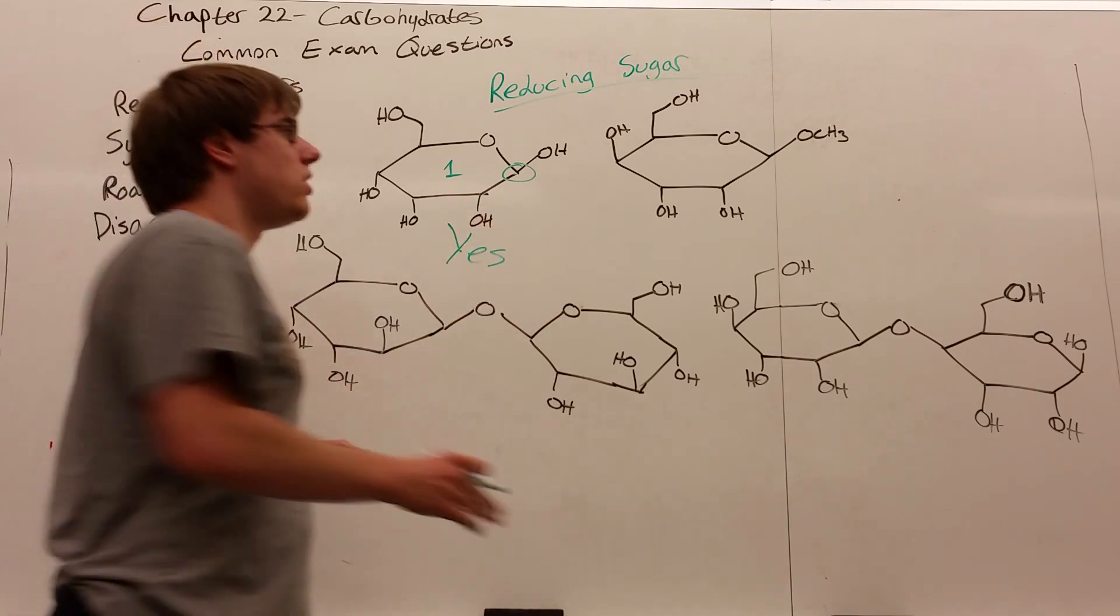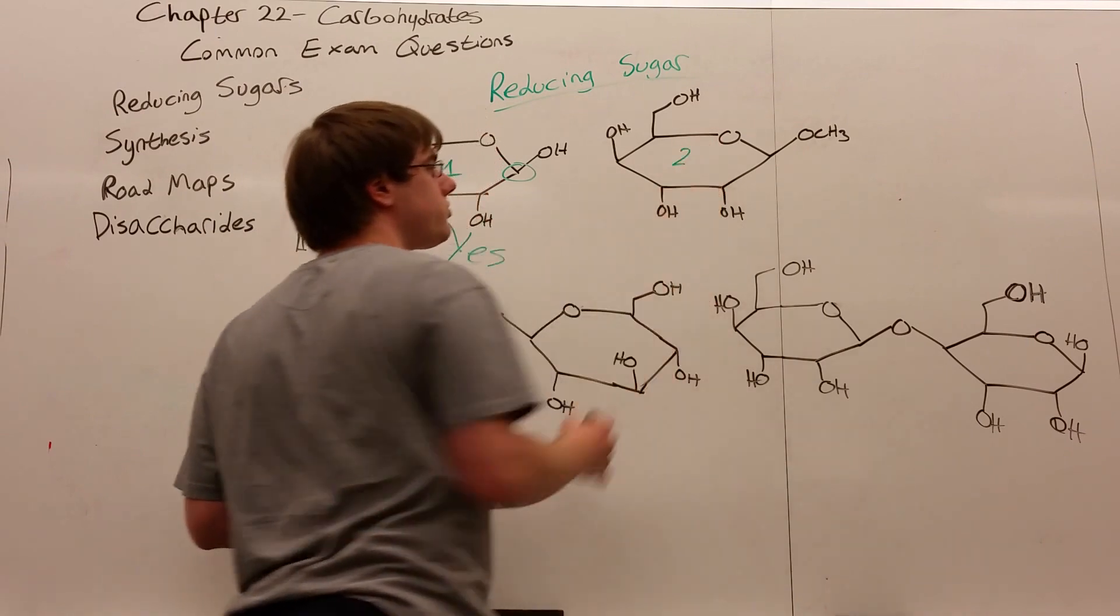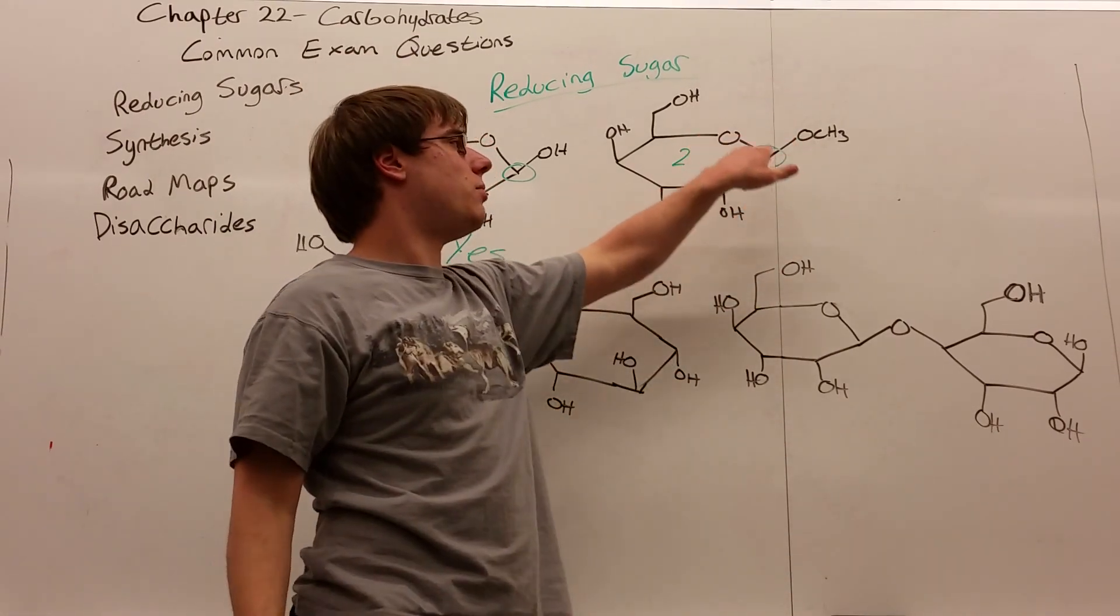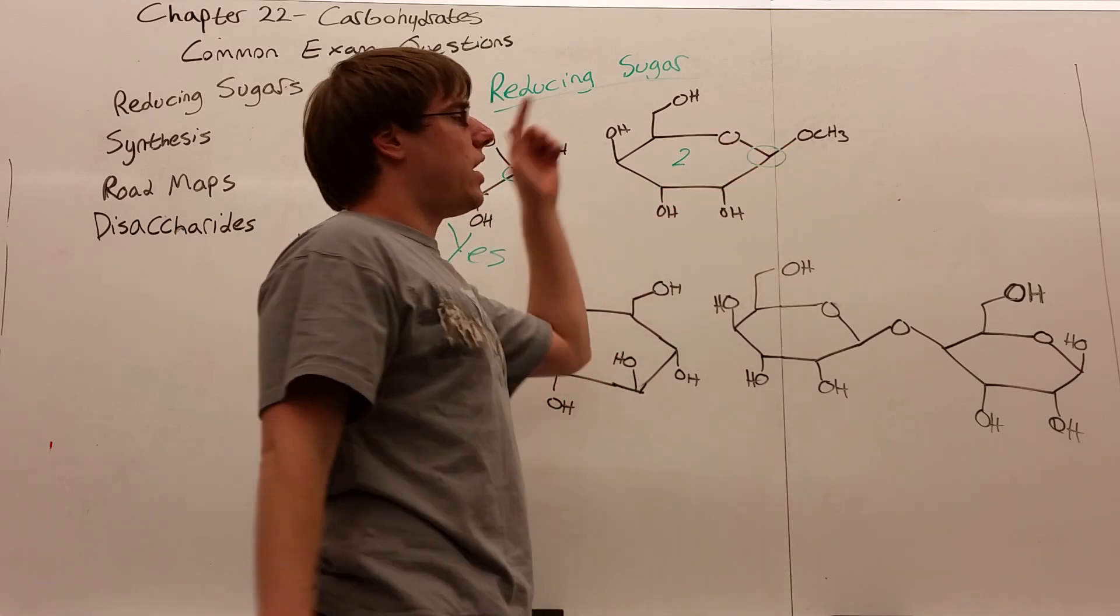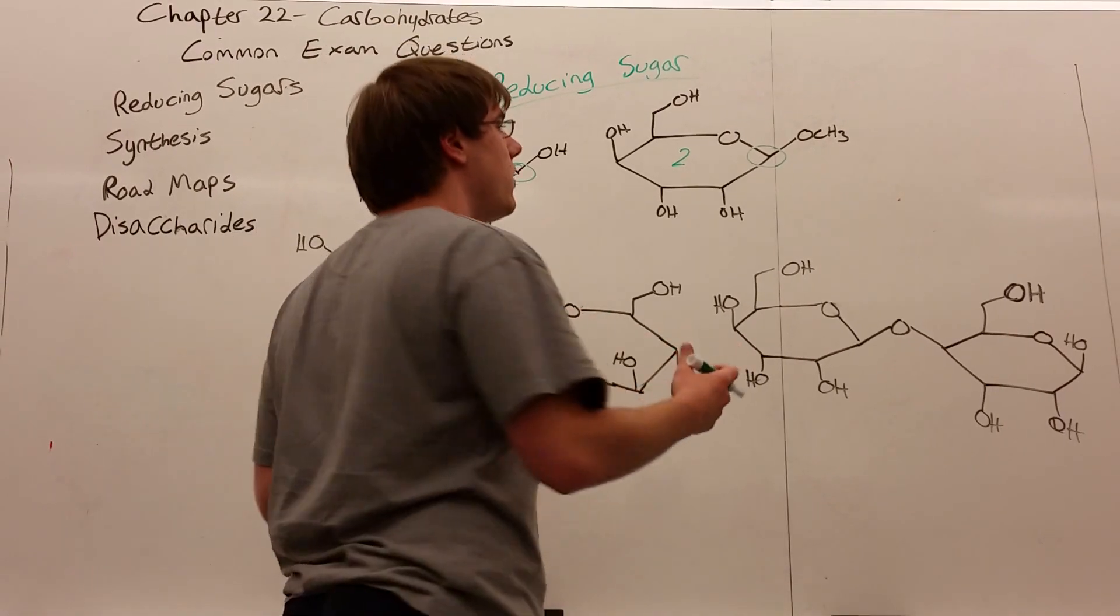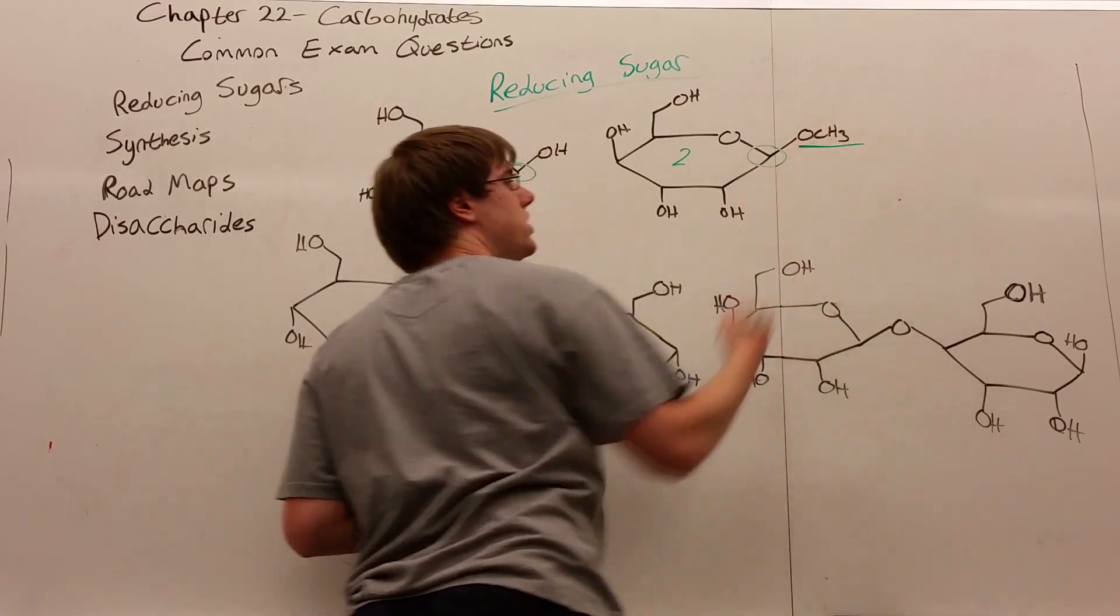Sugar one is reducing. Now we look at sugar two. We find the anomeric carbon, which is this one, because it shares a bond with two separate oxygens. And I ask, does this have its anomeric OH? Is it a reducing sugar?